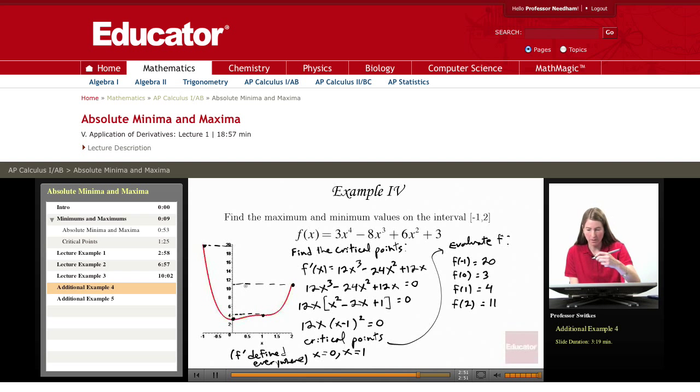Now the largest of those is the absolute max, so we have an absolute maximum given by f of negative 1 equals 20. The absolute minimum is the smallest of those, which is f of 0 equals 3. So this over here is my absolute max, this over here is my absolute min, and of course you can see that yes, those are the highest and lowest values on this plot.